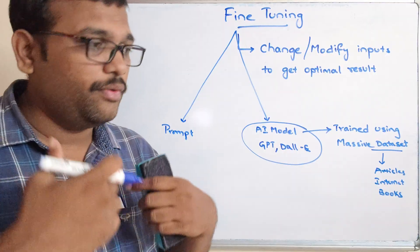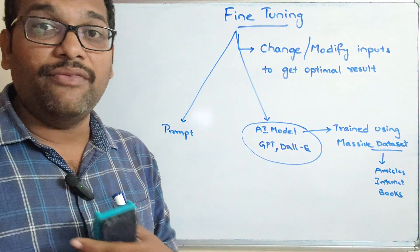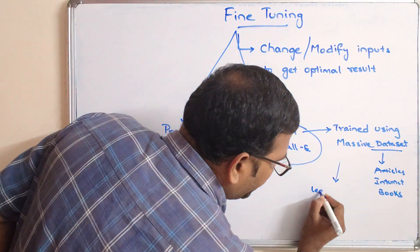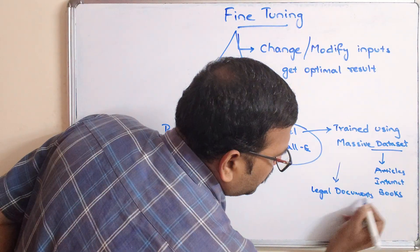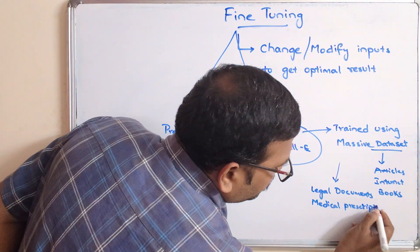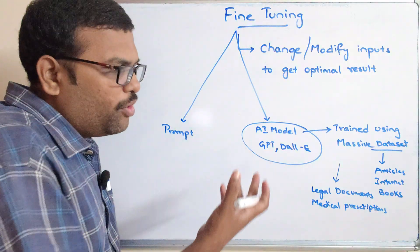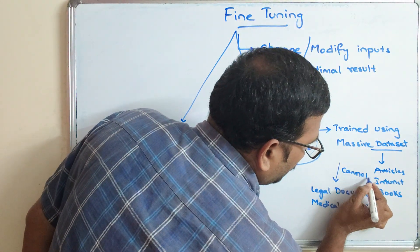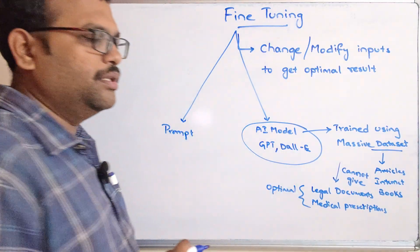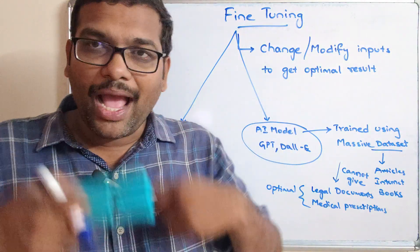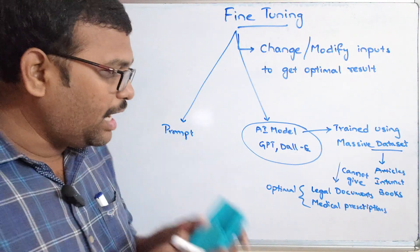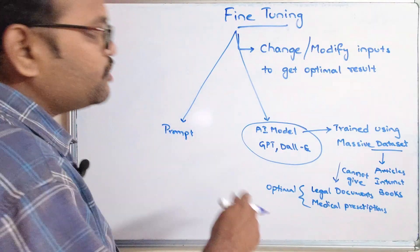It may fail - rather, it will not produce the optimal result for every concept. For example, if we want to generate legal documents or some medical prescriptions, this AI model cannot give these things in an optimal way. In such cases, what we have to do is retrain the existing AI model in that particular aspect. That is called fine tuning.